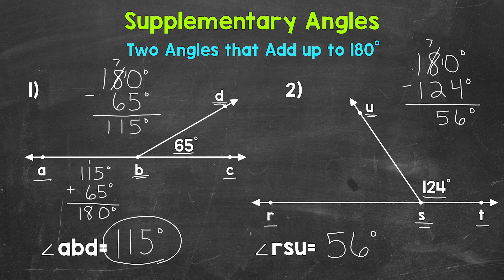And again, we can always double check. Let's do that. So we can add 124 degrees plus 56 degrees and make sure that equals 180 degrees. 4 plus 6 gives us 10. Carry the 1.